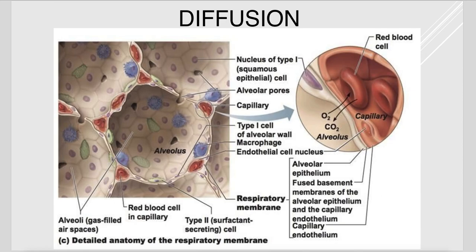This cross-section of the alveoli shows different cell types. Alveolar dust cells are macrophages that consume pathogens making their way down into the alveoli. Type 1 cells are involved in gas exchange with the blood. The respiratory membrane includes these type 1 epithelial cells of the alveoli, the endothelial cells of the capillary, and a small basement membrane between them — that's what gases have to travel across.